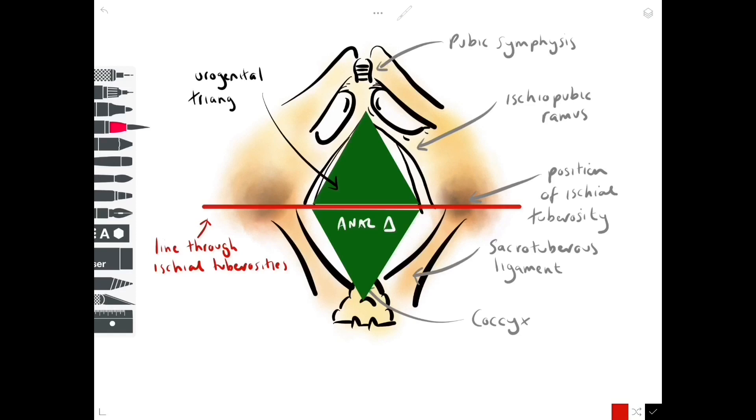We're interested in the anterior triangle called the urogenital triangle, and this has a membrane stretching across it called the perineal membrane. Now everything attaching to the perineal membrane superficially, such as the erectile tissue and associated skeletal muscle, is considered to be within the superficial perineal pouch.